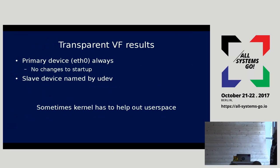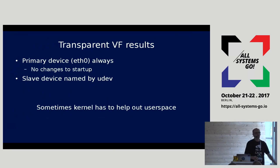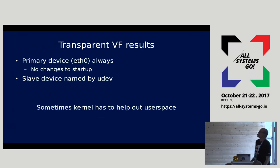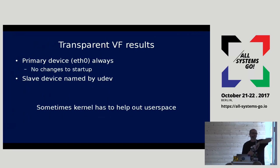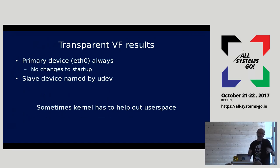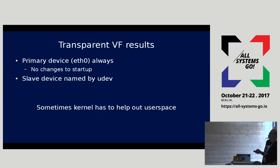So what does this result in? First, there's always an eth0 — whether you click accelerated networking or not. Cloud-init doesn't have to change; you don't have to do 16 patches to cloud-init. By putting in the delay, we let all the udev rules run that some distros want. The point is that sometimes the kernel has to change to help out user space.